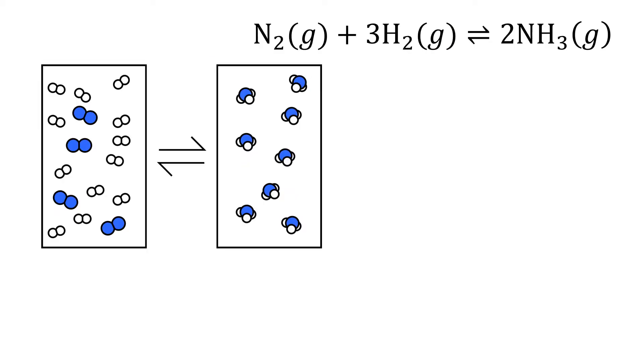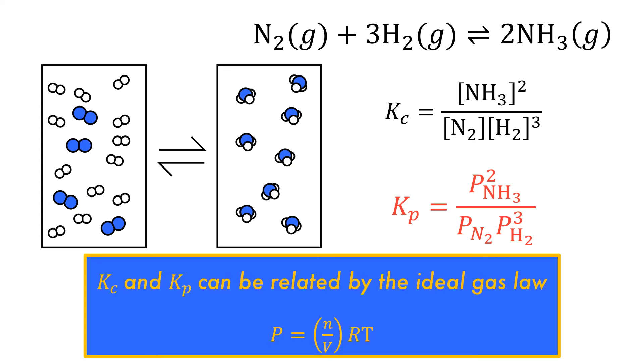The equilibrium of nitrogen and hydrogen in the formation of ammonia can be written in terms of the concentration, as shown previously, but when a reaction includes only gaseous reactants and products, the reaction constant can be written in terms of their partial pressures, following the same products over reactants, with each component to the power of the stoichiometric coefficient. Kc and Kp can be related by the ideal gas law and are thus interchangeable for gaseous systems.